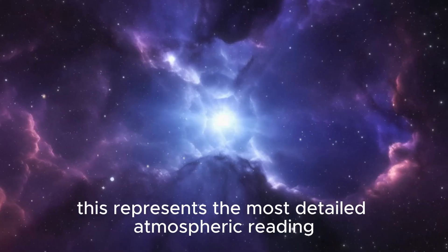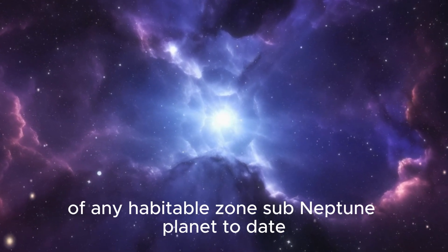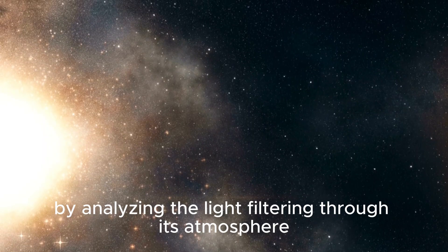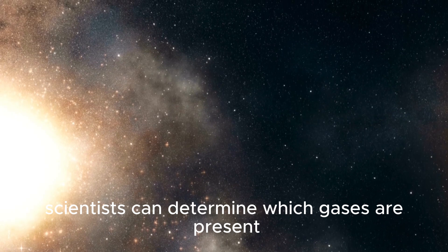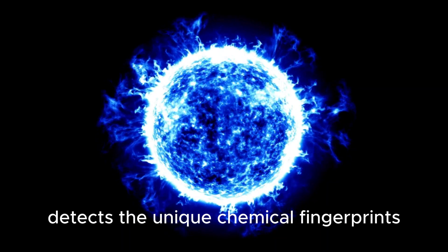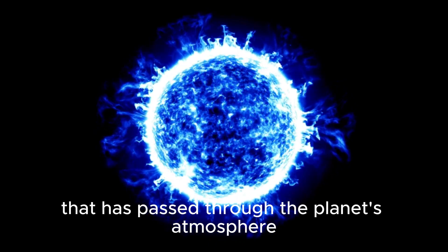Still, this represents the most detailed atmospheric reading of any habitable zone sub-Neptune planet to date. By analyzing the light filtering through its atmosphere as the planet transits its host star, scientists can determine which gases are present. During such transits, JWST detects the unique chemical fingerprints in the starlight that has passed through the planet's atmosphere.